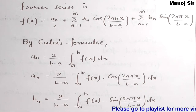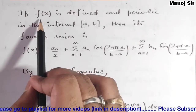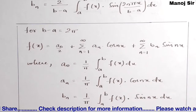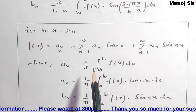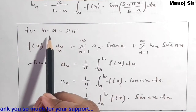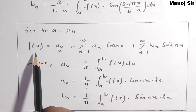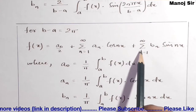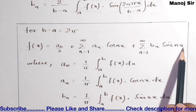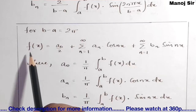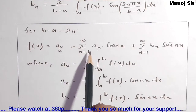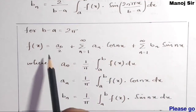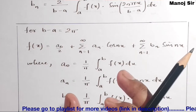Now we will see a special case. Since f(x) is periodic in the interval a to b, if we take b−a = 2π (because after 2π the cycle repeats), then f(x) becomes a₀/2 + Σ(n=1 to ∞) aₙ cos(nx) + Σ(n=1 to ∞) bₙ sin(nx). This is the Fourier series when the interval size b−a equals 2π.